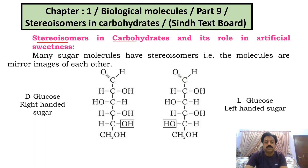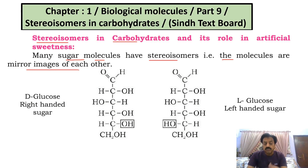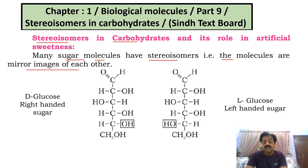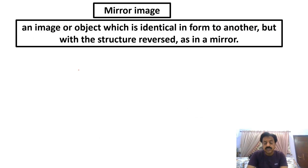Let's start by properly defining stereo isomers. In carbohydrates, two sugar molecules — for example, glucose — can be stereo isomers of each other. So what do you mean by stereo isomers? These molecules are mirror images of each other. Many carbohydrates are stereo isomers of one another, meaning they are mirror images of each other.